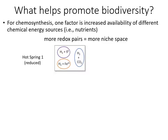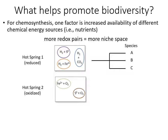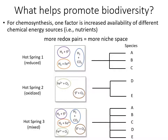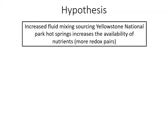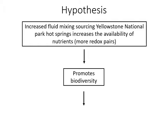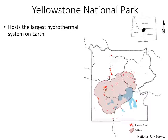To illustrate this with hot springs: if a hot spring has three different redox pairs in a reduced environment where there is no oxygen, we might support three different species. However, if you mix two environments — so if you have a hot spring with mixing — you will have a higher range of niche spaces, which might support more species, increasing biodiversity, which might then promote primary production. So I hypothesize that in Yellowstone National Park hot springs, increased fluid mixing sourcing those waters might increase the availability of nutrients — more redox pairs — which will increase biodiversity and then increase primary productivity.